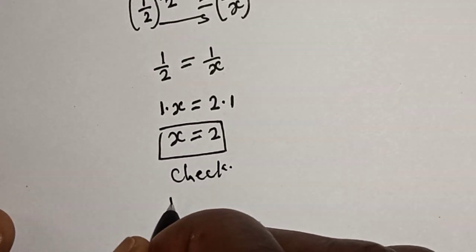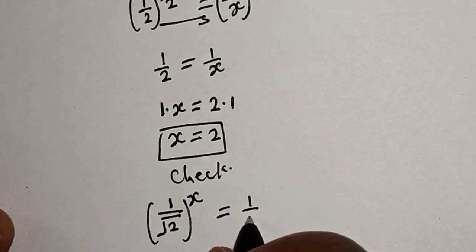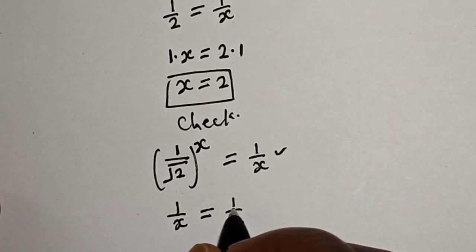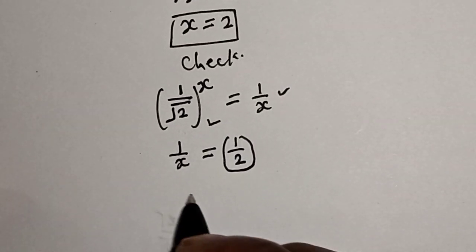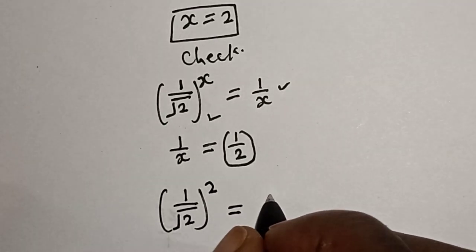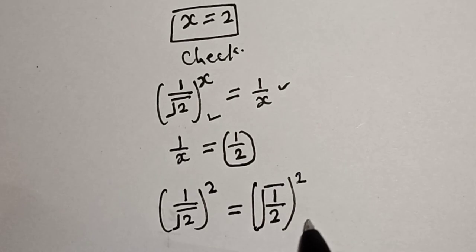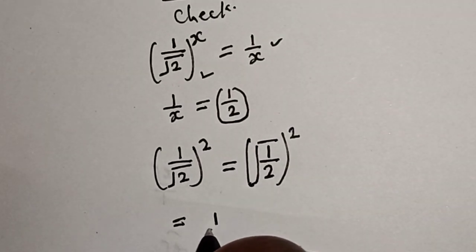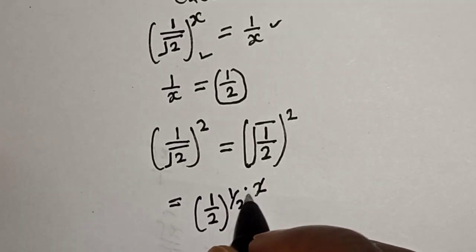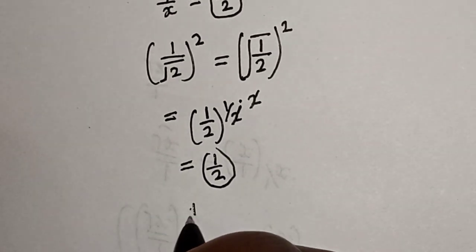We have the given equation: 1 over square root of 2, all raised to power of s, must be equal to 1 over s. For the right hand side, 1 over s is equal to 1 over 2. For the left hand side, we have 1 over square root of 2 raised to power of 2, which equals 1 over 2 squared, all raised to power of 1 over 2. This is equal to 1 over 2, raised to power of 1 over 2, raised to power of 2, which simplifies to 1 over 2.